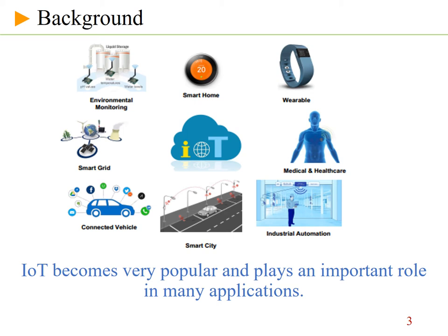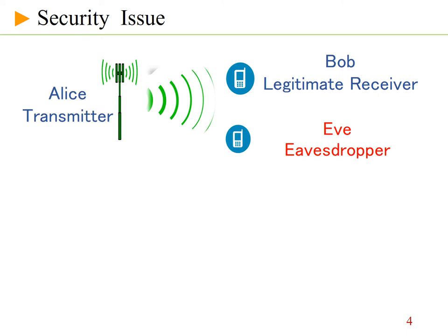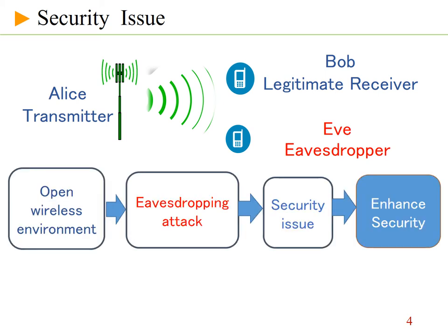In recent years, the Internet of Things has become very popular and plays an important role in many applications such as smart home, smart grid, and smart healthcare. This motivates researchers to investigate a variety of issues in IoT applications. Most IoT applications rely on wireless connections, which makes transmission vulnerable to attackers. Moreover, many transmitted data are private or confidential information, which is why we need to enhance the security of IoT connections.